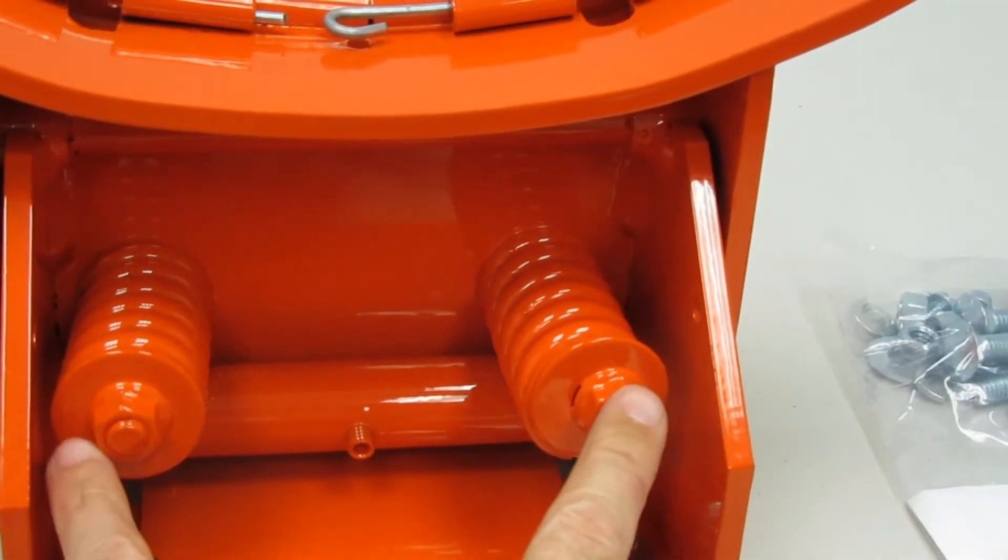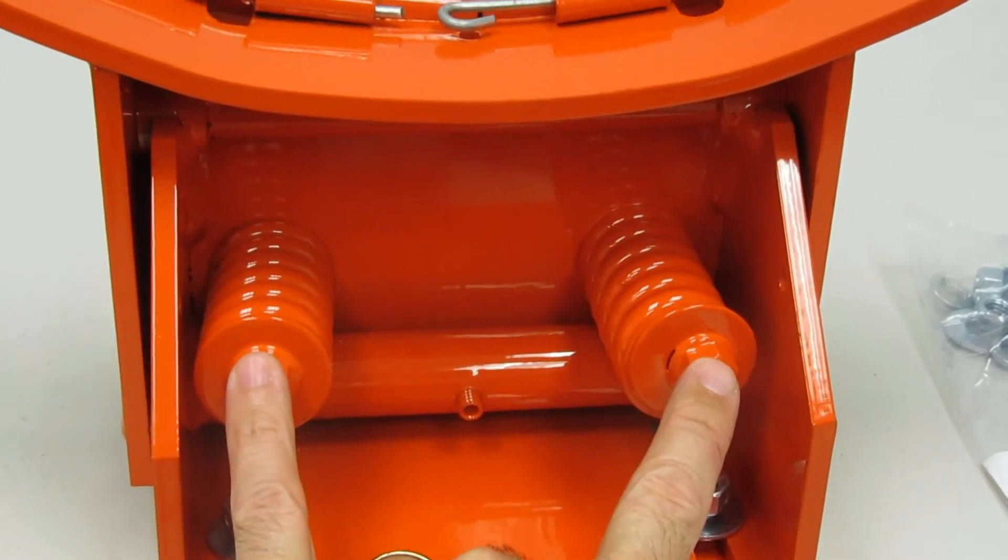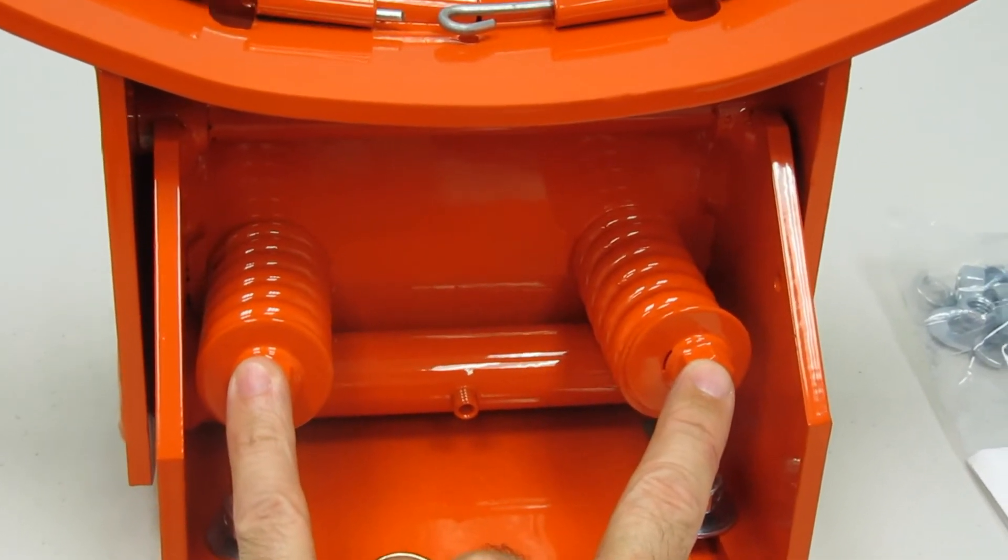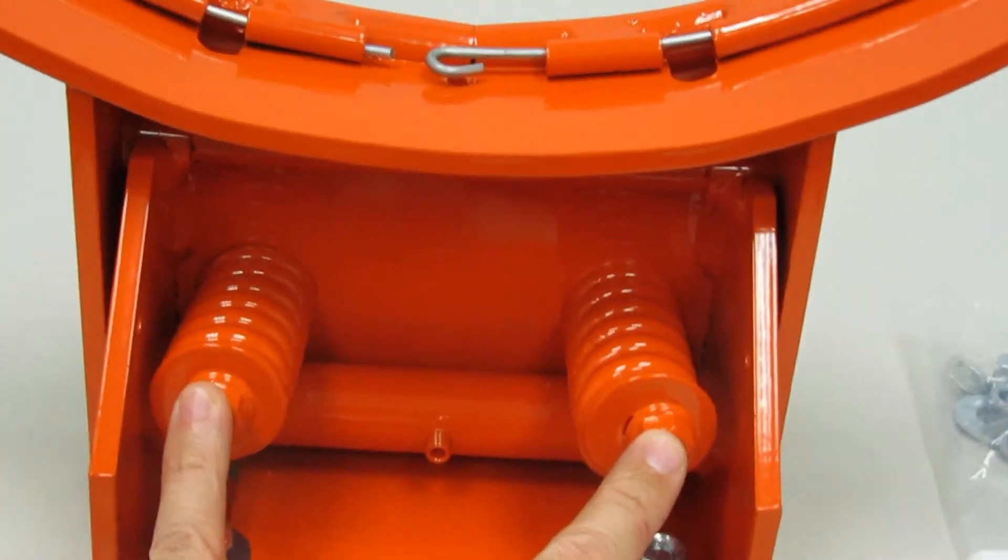The two return springs on the inside will bring the rim back to its original position when the player lets go of the rim.